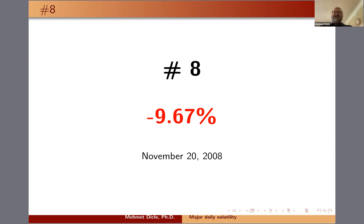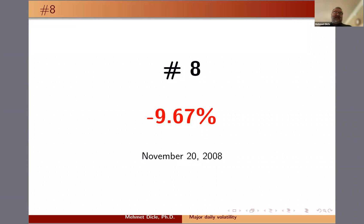I want to remind you that there are actually circuit breakers in the market that would trigger if the market dropped so much. Having a 9% or 10% range for these dates — and when you look at the data there are actually a lot of dates where the volatility is about 8% or 9% — that was very interesting to me.